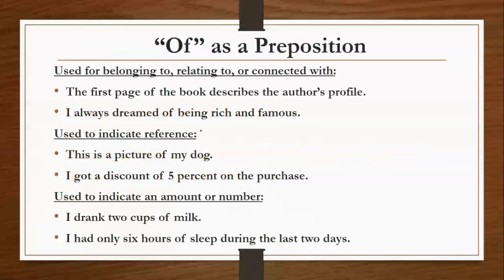सबसे पहले हम जिस preposition की बात करेंगे वो है 'of'. Used for belonging to, relating to, or connected with. जब भी कोई चीज किसी को belong करती है, किसी चीज से relate करती है, या फिर connect करती है, तब हम 'of' preposition का use कर सकते हैं।